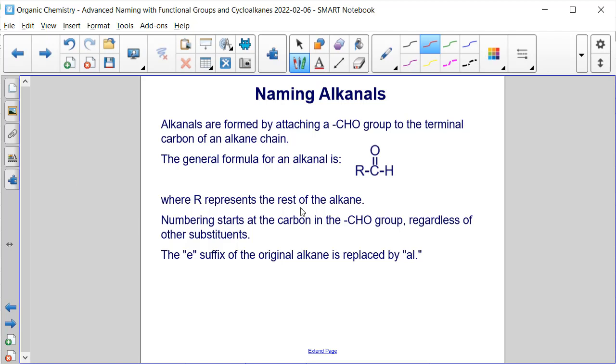Alkanals are formed by attaching a CHO group to the terminal carbon of an alkane chain. So if this R is our parent chain, then that means we're at the end of it. And at the end of that parent chain, we add C double bond O, H. Numbering starts at the carbon in the CHO group. So this will always be carbon 1, regardless of any other substituents.